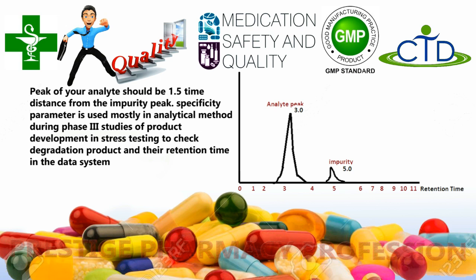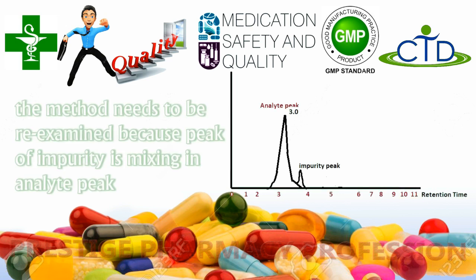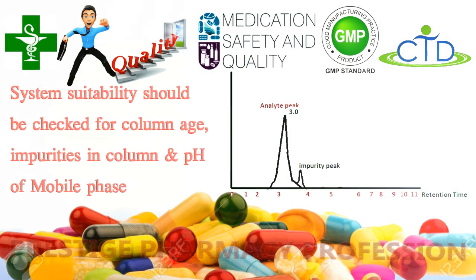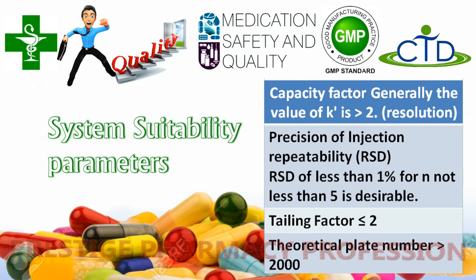If the impurity peak is separated from the analyte peak, the method is validated. The specificity test is required during phase three trials to check any degradation product mixing with the analyte peak. If the impurity peak mixes with the analyte peak, the method is not validated. During stress testing, this would prove the method is not applicable post-marketing when a product faces harsh environmental conditions. Peak mixing may also occur due to column age, impurities in the column, or pH of the mobile phase; therefore, system suitability should be confirmed before starting validation.